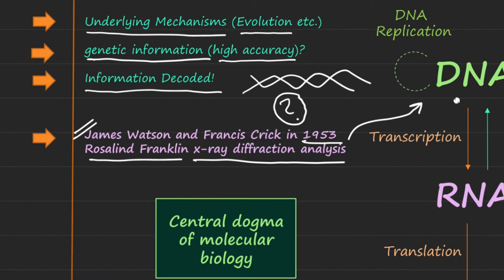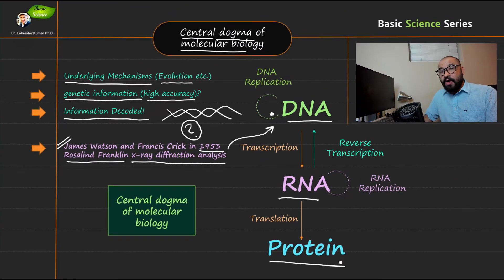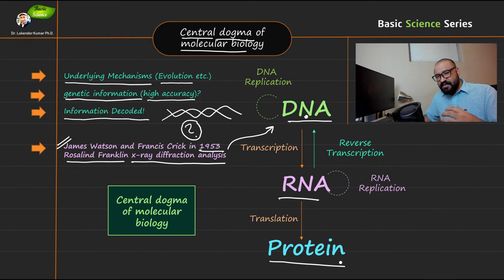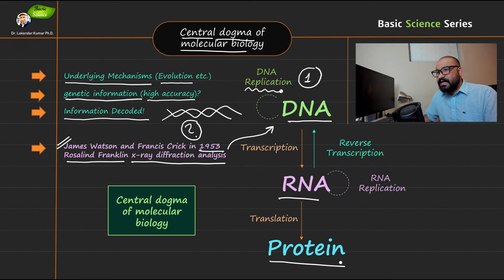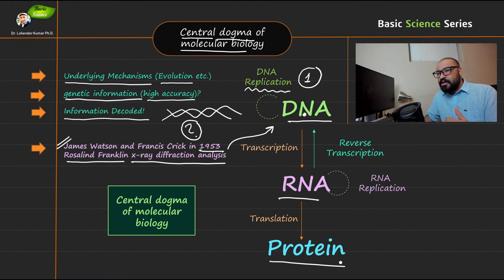In the central dogma you have three key points to remember: first is DNA, second is RNA, and third is protein. The information is encoded in a molecule and needs to be present in the next cell, so it requires replication of that information. Step one in the central dogma is the DNA molecule replicating and making another DNA molecule with the same information that the parent cell has.